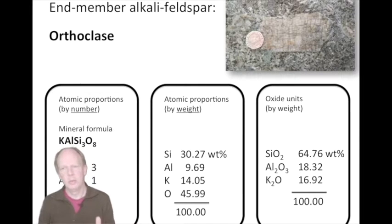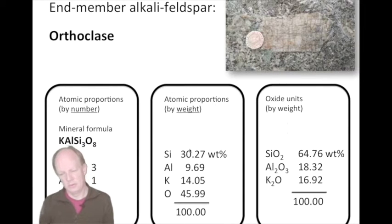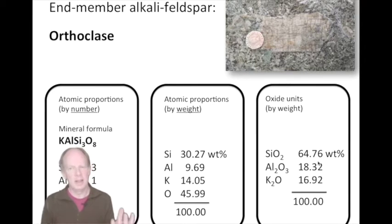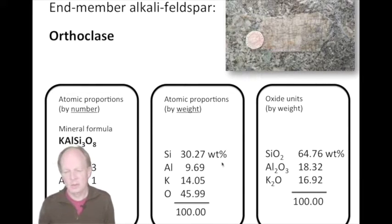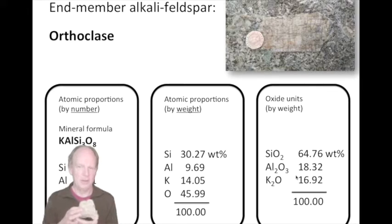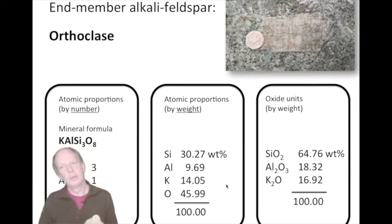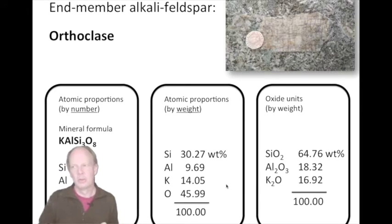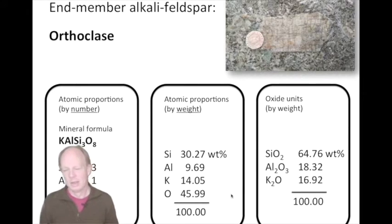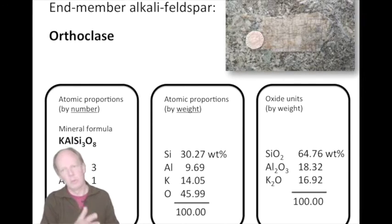Also note that in these two representations on the right, the numbers normally add up to 100 — if we've analyzed all the elements present, these numbers should sum to 100. So these are the three representations of this alkali feldspar that you'll see used interchangeably in the literature. If you have your data in one form and want to compare it to a report that uses oxides, you have to be able to calculate and go from one to the other.